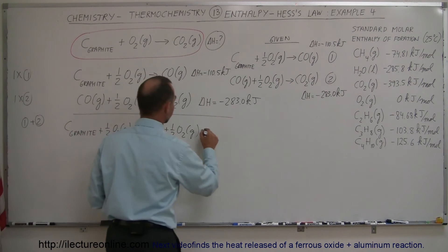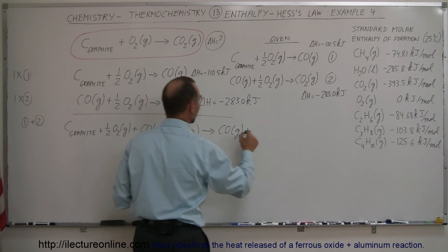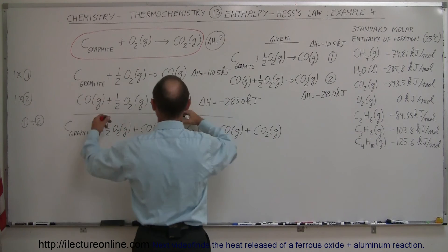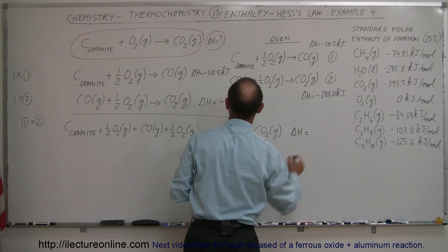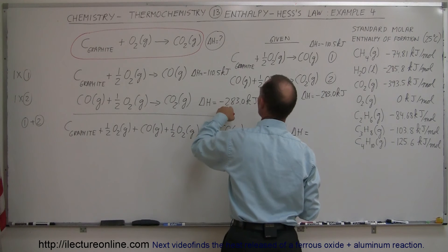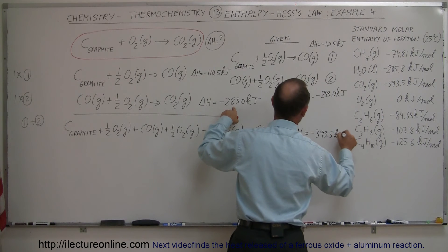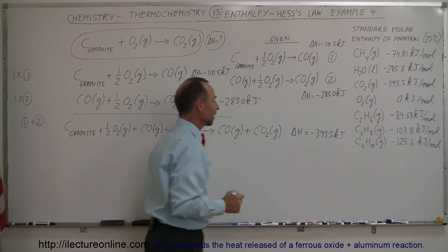On the right side, you end up with one mole of carbon monoxide gas and one mole of carbon dioxide gas. When I combine the two equations, I have to combine the enthalpies. That means delta H equals—that becomes minus 393.5 kilojoules. Yes, that's correct, 393.5 kilojoules.